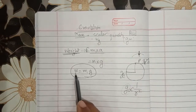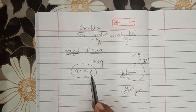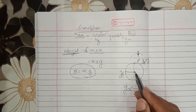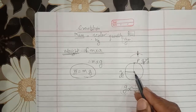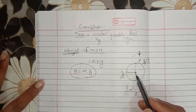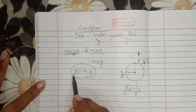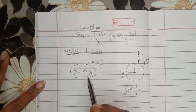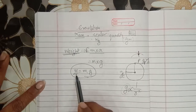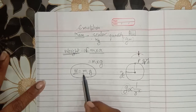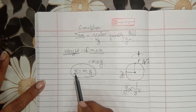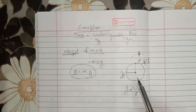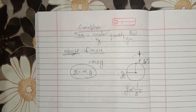Weight depends on g. At the center of the Earth, the value of g is zero, so the weight will also become zero — this is called weightlessness. At the center of the Earth, an object would not have any weight, though its mass cannot be zero.